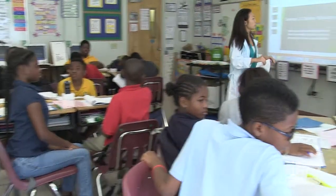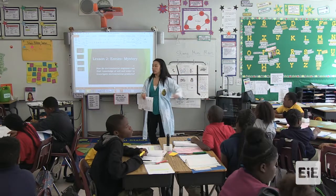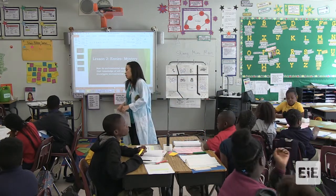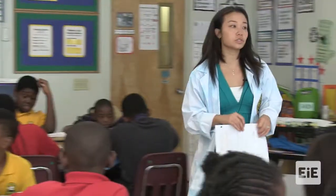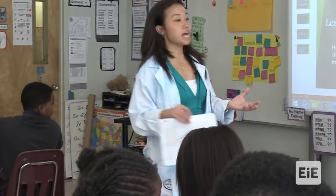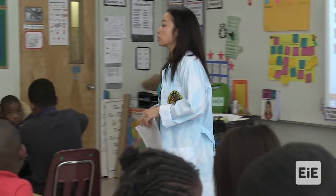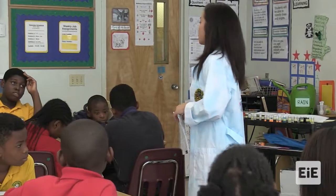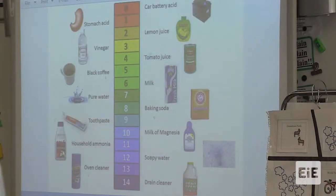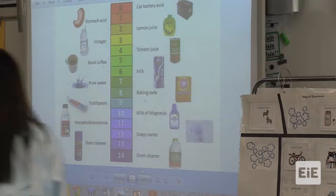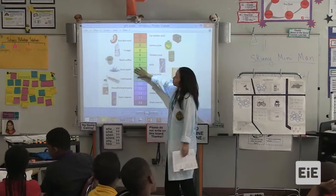Now we know in Greentown there are issues and concerns going on. As environmental engineers we want to run a few tests. We know that environmental engineers do a lot of testing — they test the soil, they test the water. And you guys are going to get a chance to test something called the pH. This is a pH scale. We can use this as environmental engineers to test the soil and the water.